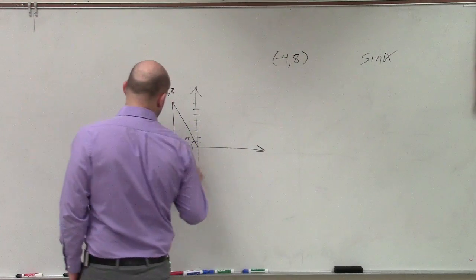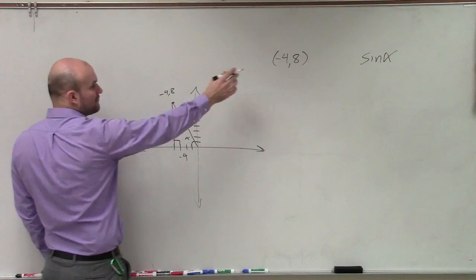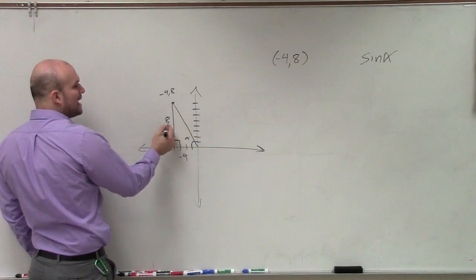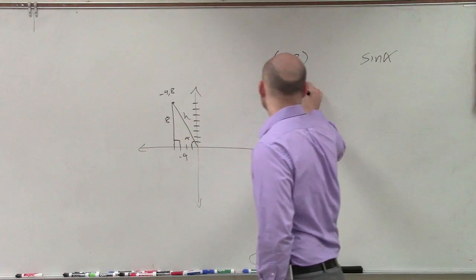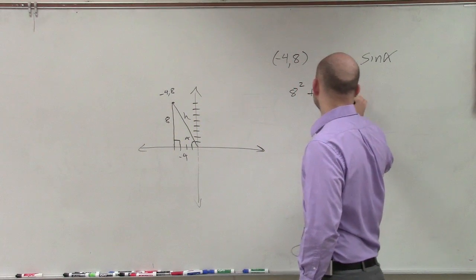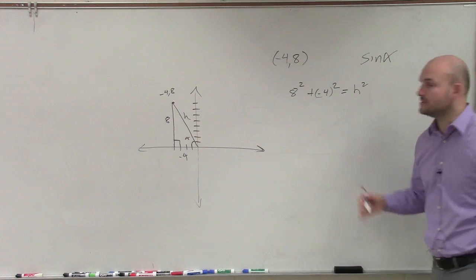So now we have our coordinate point. So that means that length is negative 4 and that length is 8. So we need to figure out, if we're trying to find sine, sine is opposite over hypotenuse. We don't know what h is. So I do 8 squared plus negative 4 squared equals h squared. Right? Apply the Pythagorean theorem. It's a right triangle, so we can do that.